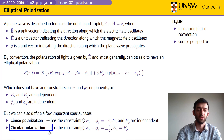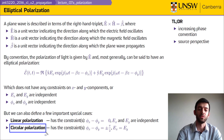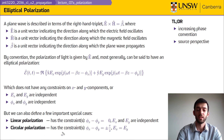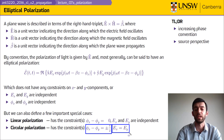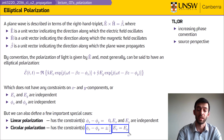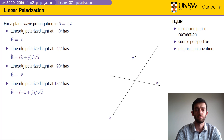And then there is circular polarization, which requires the two components Ex and Ey to be exactly π/2 out of phase with one another, and also requires |Ex| to be equal to |Ey|.